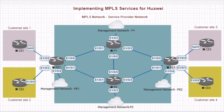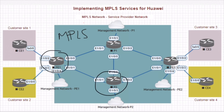Before we get started to configure segment routing over the MPLS network, I have to check the initial configuration file for PE1 and PE2. We will check each point in the configuration file one by one. The configuration file of PE1 is similar to PE2 and vice versa.